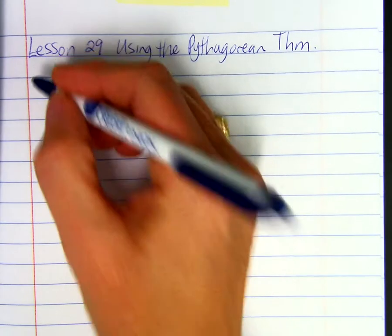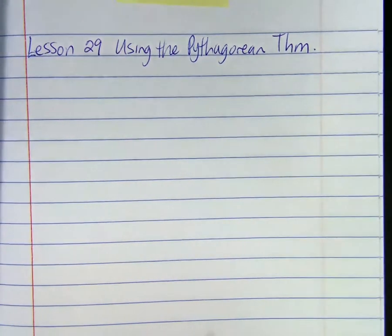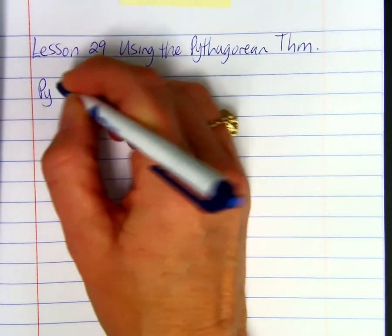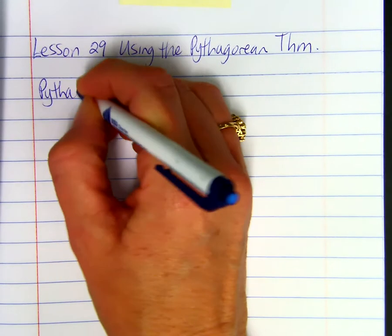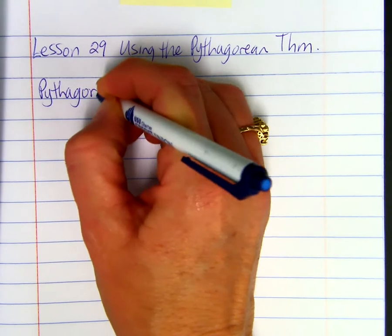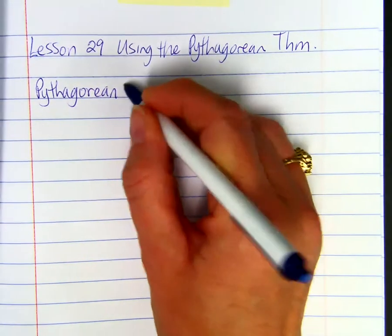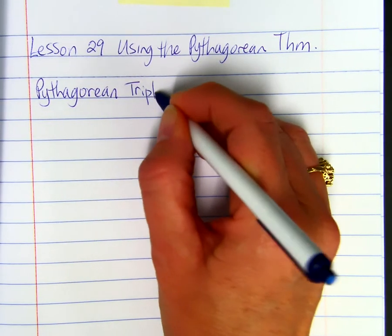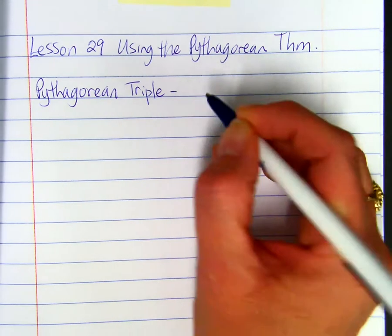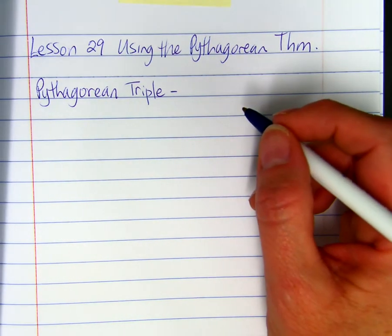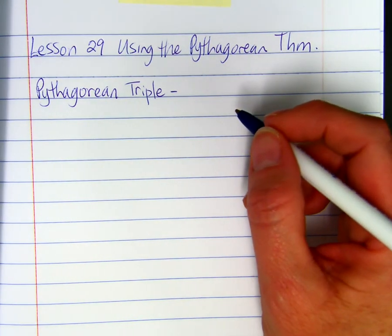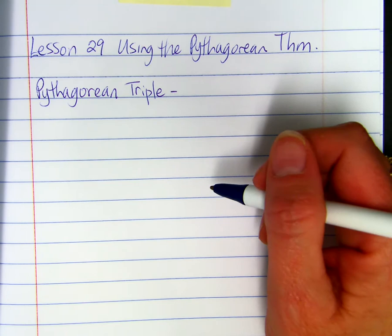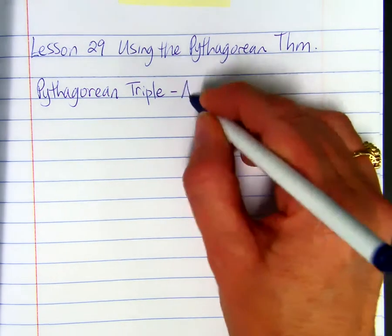We're going to first go over what a Pythagorean triple is. A right triangle can only be considered a Pythagorean triple if all three side lengths of the right triangle are whole numbers.